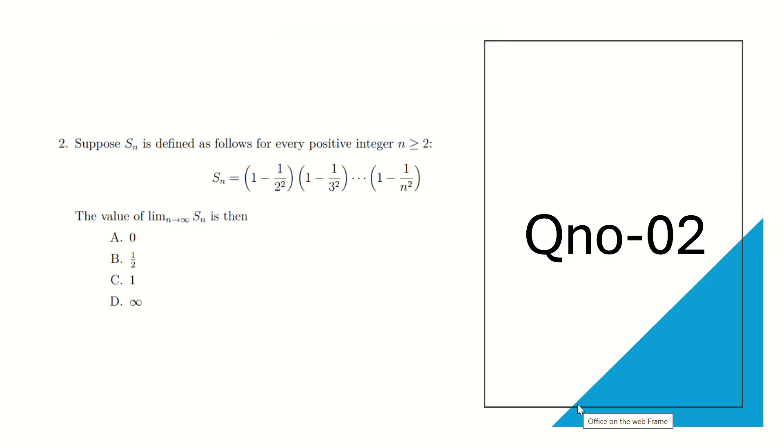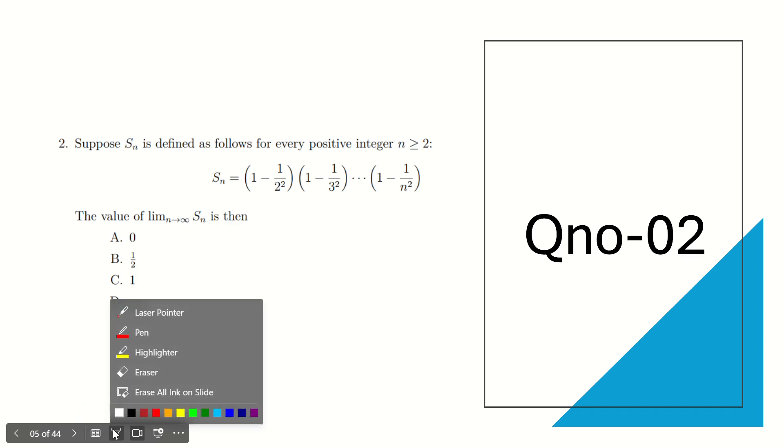Question number 2. Suppose S_n is defined as follows for every positive integer n greater than or equal to 2: S_n equals (1 - 1/2²)(1 - 1/3²)...(1 - 1/n²). The value of limit n tends to infinity S_n is then: 0, half, 1, or infinity.